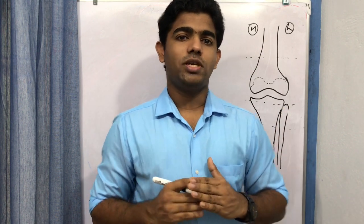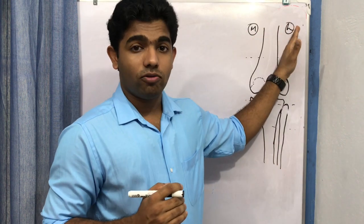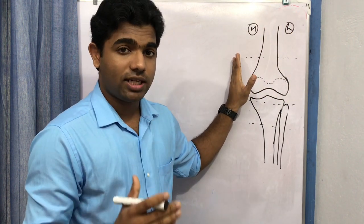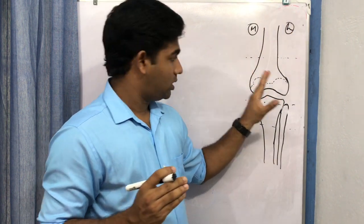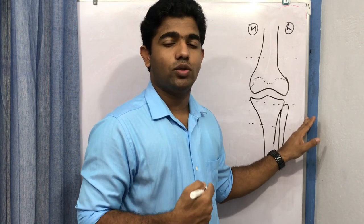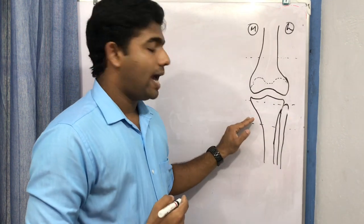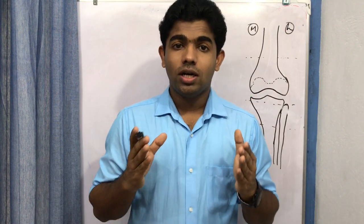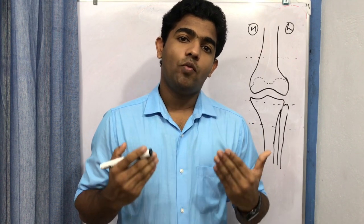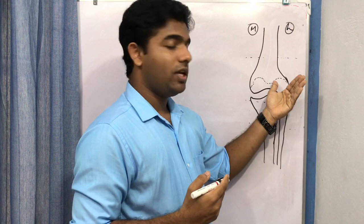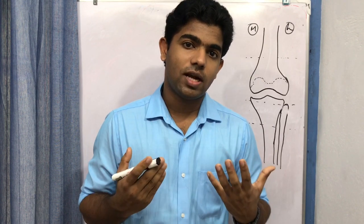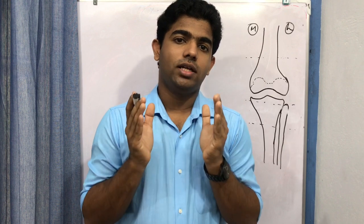We saw the boundaries of the popliteal fossa: laterally in the thigh region we have the biceps femoris; medially we have semitendinosus and semimembranosus; laterally in the leg region we have the lateral head of gastrocnemius; medially we have the medial head of gastrocnemius. The floor is made up of the femur, the knee joint, and the fascia covering the popliteus muscle.